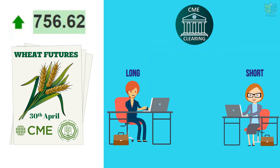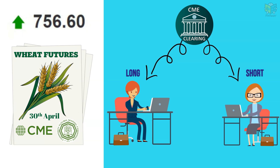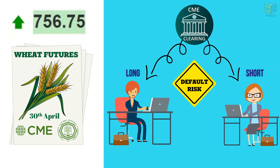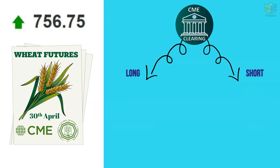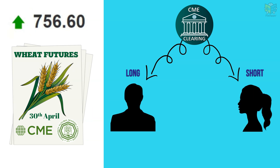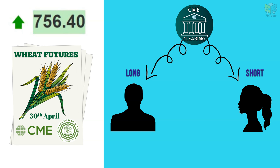As the clearing house is the counterparty for each trade, the default risk is eliminated and the buyer and seller remain anonymous to each other. We have already covered the features of exchange-traded contracts in our previous video, OTC vs. Exchange-Traded Contracts.